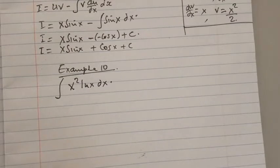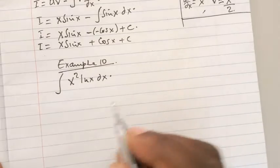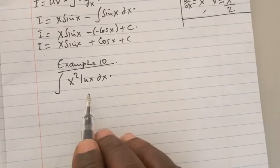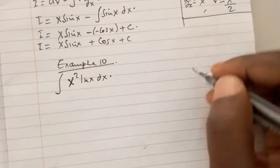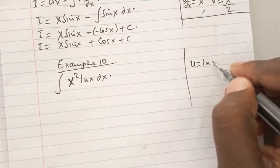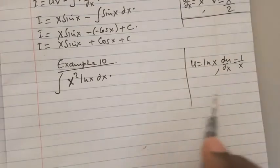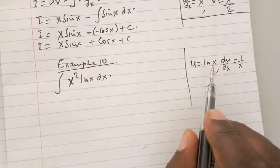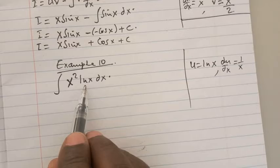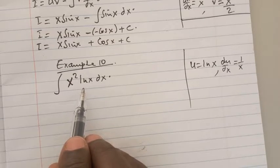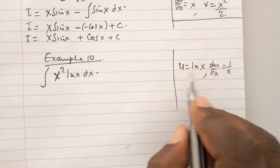I want to say something here. Anytime you are having a function that has ln x, please be sure to let ln x be u. So in this case, u equals ln x and du/dx is 1/x. This is because it is easier to differentiate ln x other than integrating it. If we chose dv/dx to be ln x, integrating it to get v would be a bit complicated. That is why you are advised to choose ln x to always be the u.